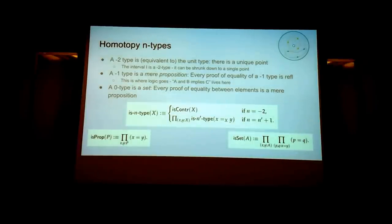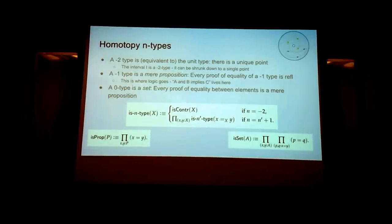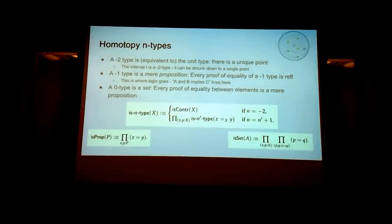Homotopy n-types: this is one of the new things higher inductive types bring. A negative-two type is equivalent to the type of just a single element — it can be shrunk down to just that element. A negative-one type is called a mere proposition, where every proof of equality of a negative-one type is reflexivity — this is where logic goes. Every proposition is a mere proposition. A zero type is what we call sets, where every proof of equality between elements is a mere proposition.